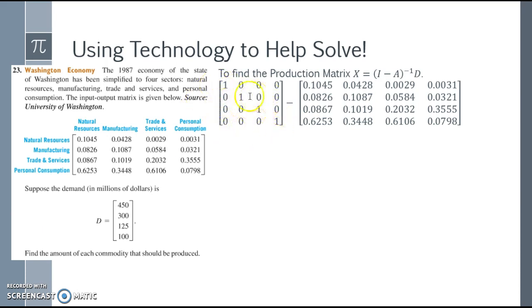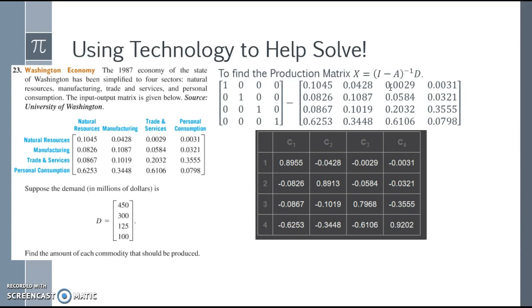Now I'm going to take this matrix and subtract the one that we are given. I'll take 1 minus 0.1045, 0 minus 0.428, 0 minus 0.0029, etc. When I subtract them all, I end up with this matrix here. Notice that some of them are positive and some of them are negative, and that's okay.